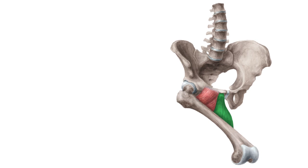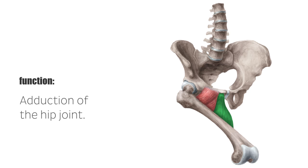As the name suggests, the main function of the hip adductors is the adduction of the hip joint. Furthermore, the adductor longus supports flexion. The hip adductors are particularly used when crossing one's legs. Overall, they play an important role in balancing the pelvis during standing and walking.